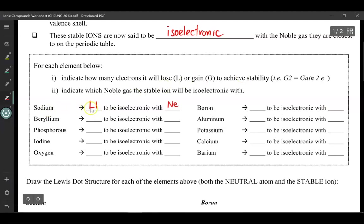So I write down that sodium will lose one electron in order to be isoelectronic with neon gas. Alright, so press pause and try the rest yourself. When you're ready, press play, and let's compare your answers.